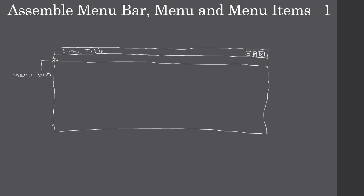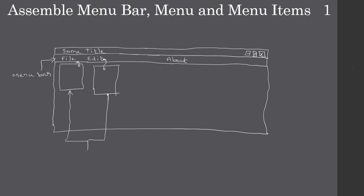First we will have a menu bar, and inside the menu bar we will attach menus — for example, File. If you see, first we have the menu bar, and inside the menu bar we have menus. This is the menu title File, and this is the pop-up — once you click File it will show the pop-up. Similarly, once you click Edit it will show the pop-up. So we call these two as menus. We have a menu bar, the menu bar contains menus. Menu one has the title File and menu two has the title Edit — people usually call them the File menu and Edit menu.